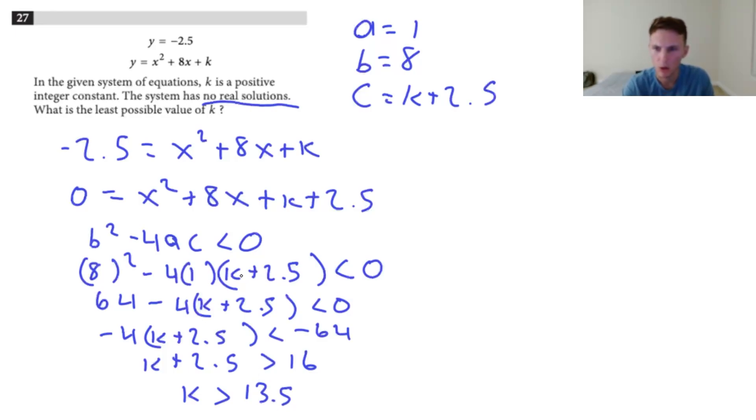And then we just subtract the 2.5 over to the other side. So k has to be greater than 13.5. But we're not done. The question asks for k and tells us it's a positive integer constant, and we're asked to find the least possible value of k. So basically, we just have to round up from 13.5. So the answer is going to be k equals 14, because that is the smallest possible integer k could be. Because k could be 15, 16, 17, etc. But 14 is the lowest we can go, so that is our answer.